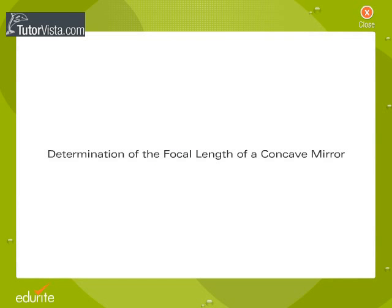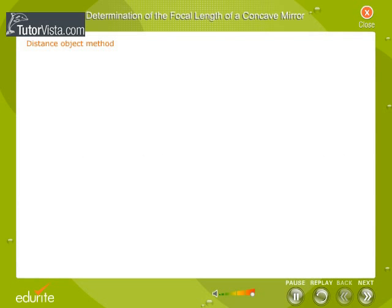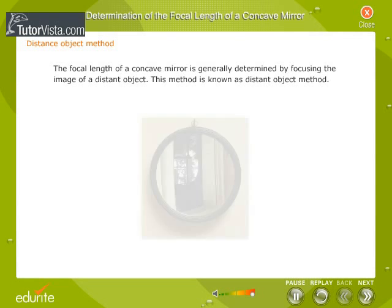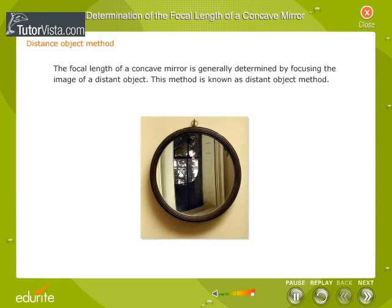Determination of the focal length of a concave mirror. The focal length of a concave mirror is generally determined by focusing the image of a distant object. This method is known as the Distant Object Method.